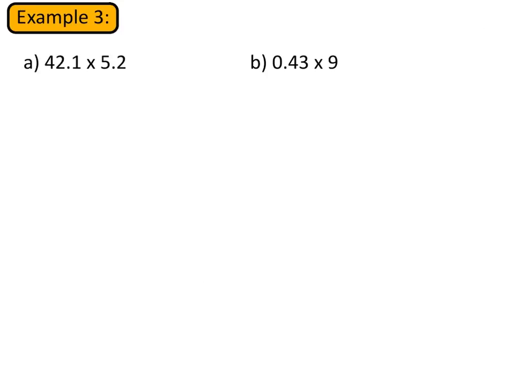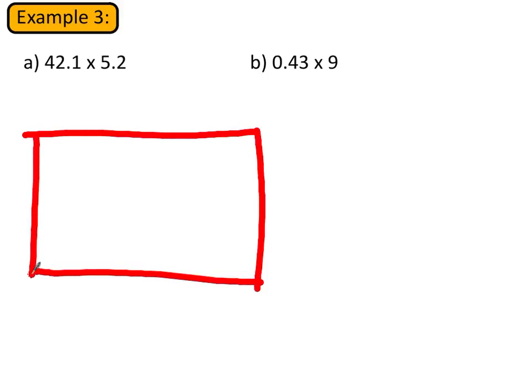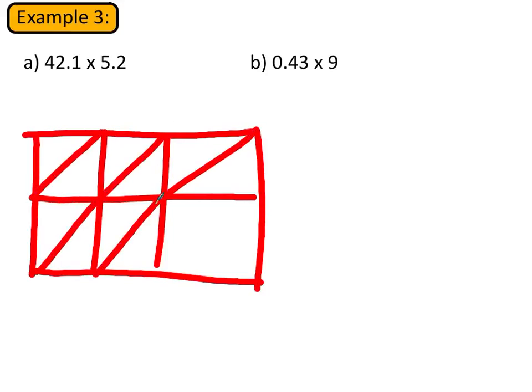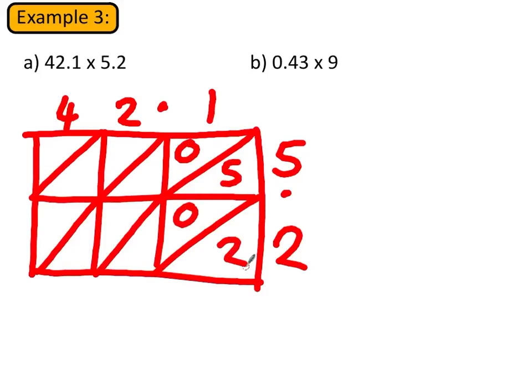We can extend it further though. It's not just about two-digit numbers, it can also be about bigger numbers and decimal numbers. So if I'm doing this one, we just need to construct a bigger box. So 42.1 has three digits, 5.2 has just two digits. So if we're going to construct this box, it's going to look something like this. So 4, 2.1 and 5.2. Start to work this out: 1 times 5 is 5, 1 times 2 is 2, 2 times 5 is 10, 2 times 2 is 4, 4 times 5 is 20, 4 times 2 is 8.